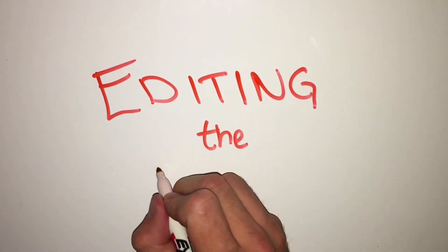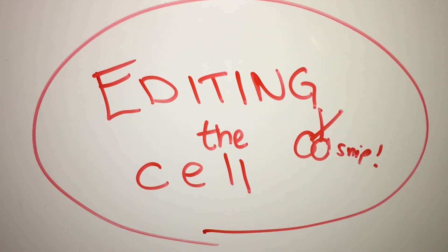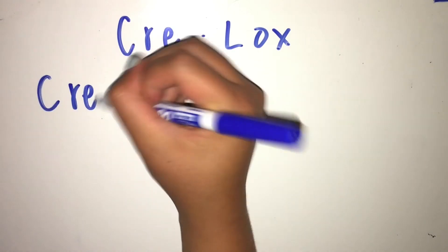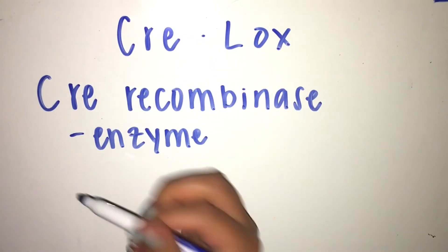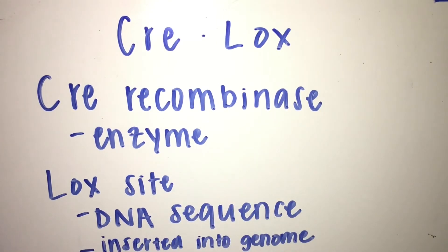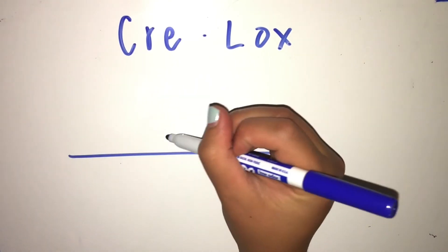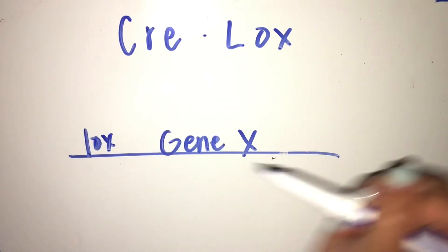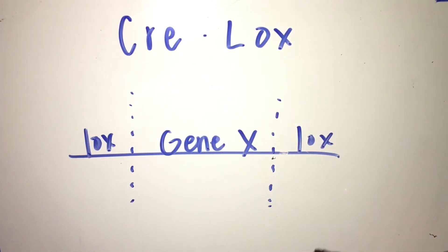To edit an organism's genome at the DNA level, we can use a technique known as CRE-LOX. The name of the technique comes from the enzyme, CRE recombinase, and the DNA sequences that are inserted into the genome, known as LOX sites. So if we locate the gene of interest, we can insert LOX sequences on either side of it. These LOX sites are the locations at which the CRE recombinase will cut the DNA strand, thus removing the gene of interest or changing its direction.